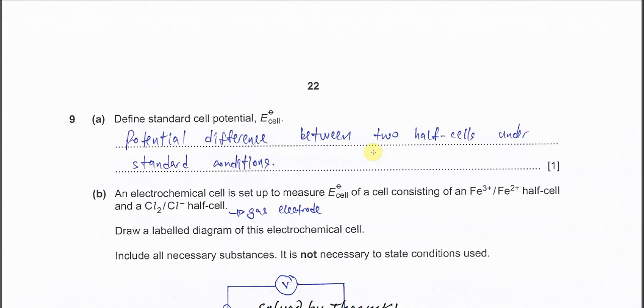Question 9a: Define standard cell potential. It's the potential difference between two half-cells under standard conditions.